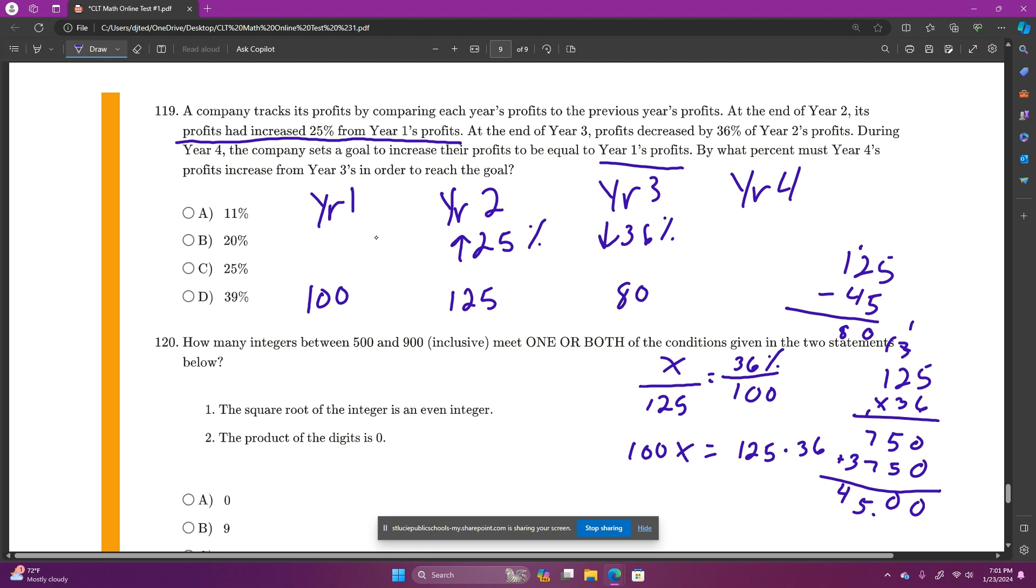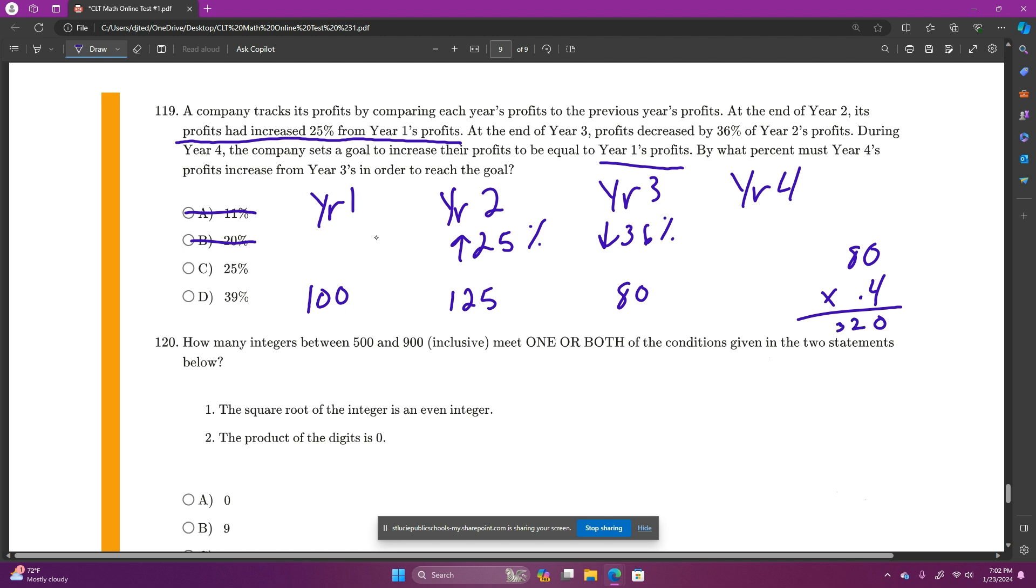And now we need to get this 80 back up to 100. So I know it needs to go up more than 20%. 20% is between 25% and 39%. One of those is the answer. Definitely know both of these are too small. It needs to go up more than 20% because 20% of 100 would be 20. Let me just check real quick what's 40% of 80. So 80 times 0.40, 4 times 8, 32. So 40% would be too much because we don't need to go up 32. So 25 is the correct amount.